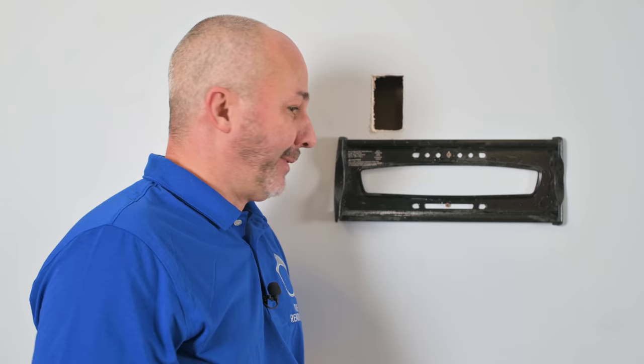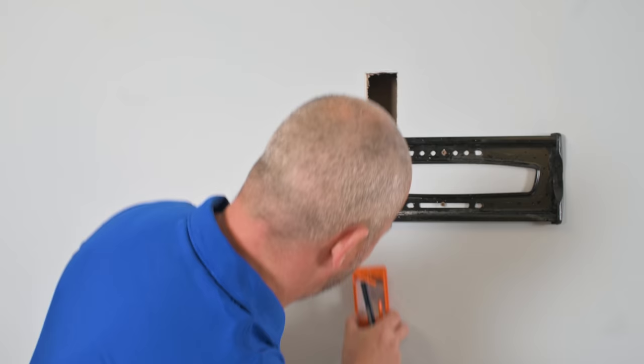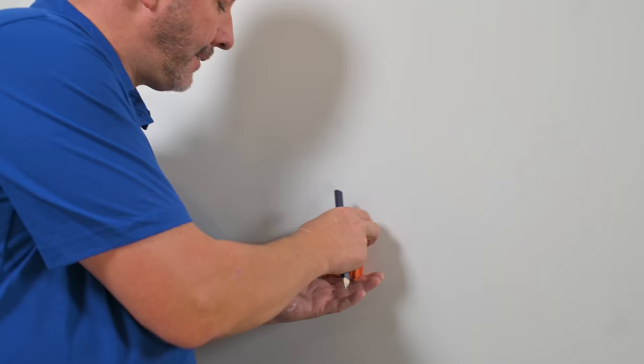Now what we're going to do is we're going to do the same technique. We're going to cut a hole down here behind where your cabinet or wherever your console is going to be so you can run your cable. All right, here we go. We're just going to trace it up and cut it just like the other one.